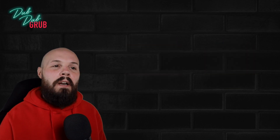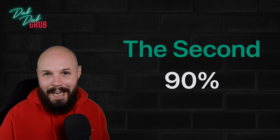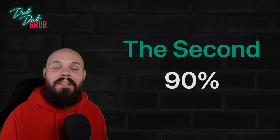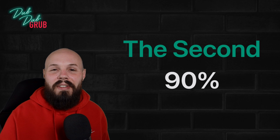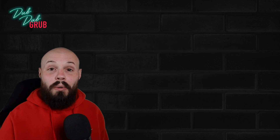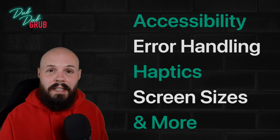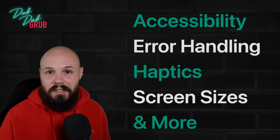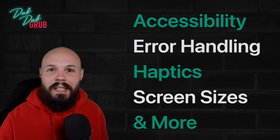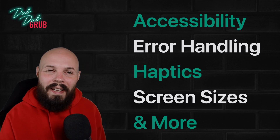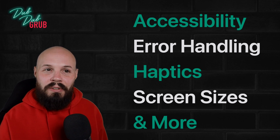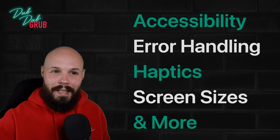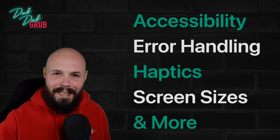After we build the main product, we're going to do the second 90%. If you've heard me say there's the first 90% of the project, then there's the second 90% — all the stuff that adds up. We're going to touch on accessibility, proper error handling and alerts, haptics for all our button presses, and making sure it looks great on all screen sizes. All that maintenance and polish that you have to do after the bulk of the product is built — we'll have a whole section for that.